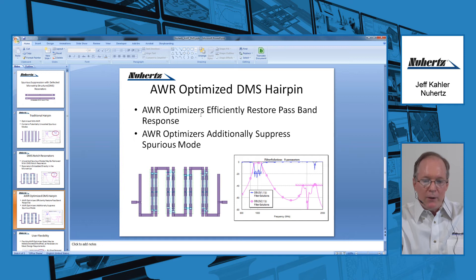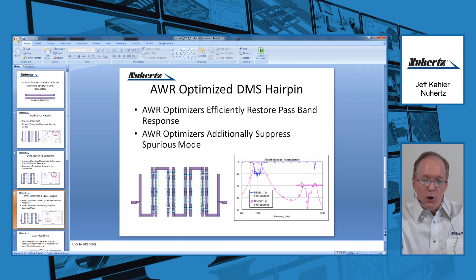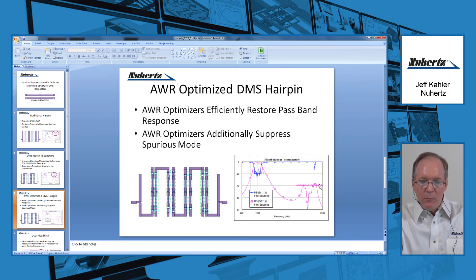Now we've taken the same filter and run it through the AWR optimizers again, and two things happen. The passband gets restored by the AWR optimizers, and Newhertz has installed a new S12 optimization goal at the spurious mode. We can see that the spurious frequencies have now been reduced dramatically, all the way down to 40 dB, with very few exceptions. It is a very simple process: just export with the DMS resonators installed, run the AWR optimizer, sit back for just a few minutes, and you eventually get this response for your DMS resonator hairpin.